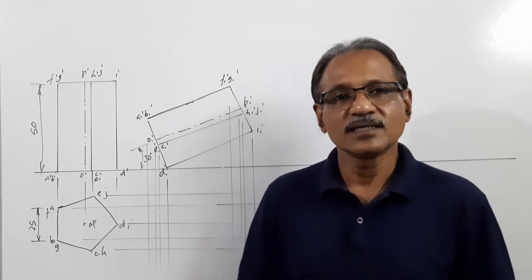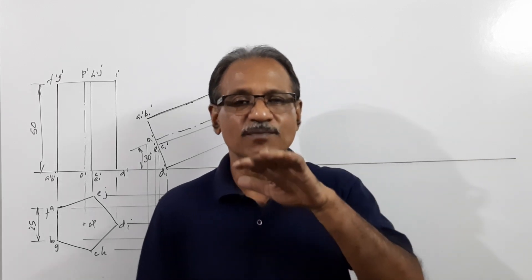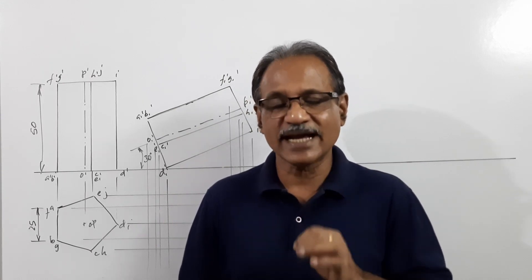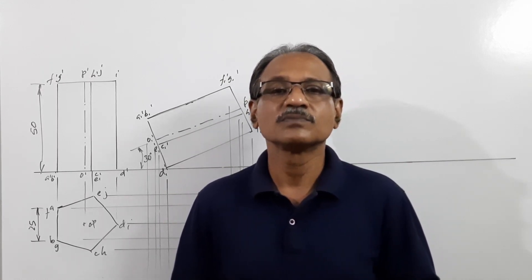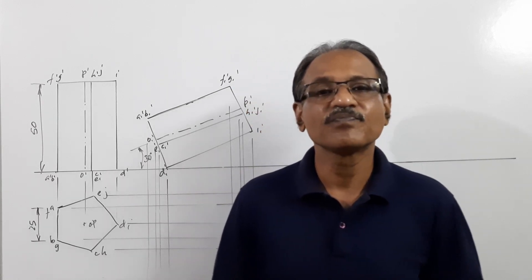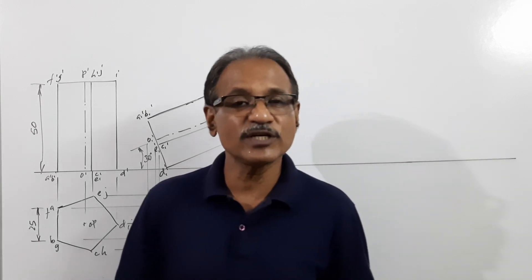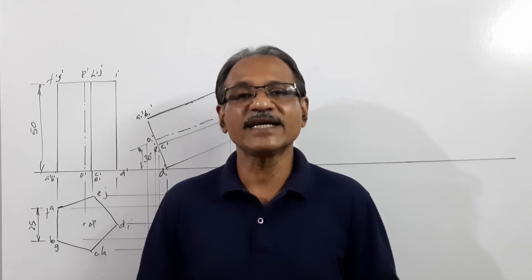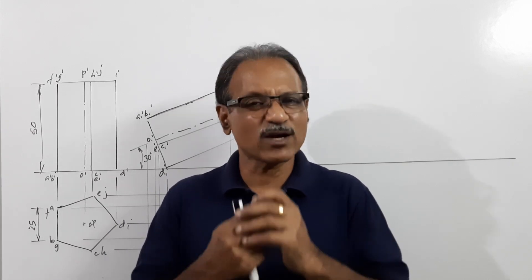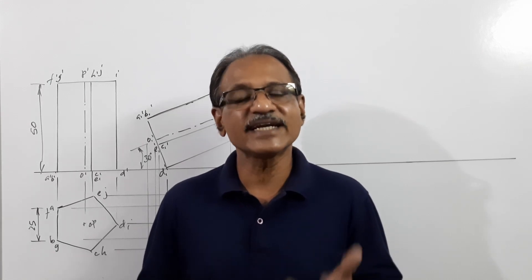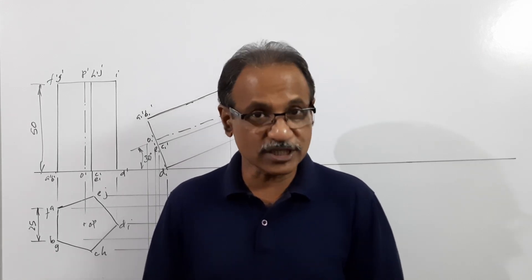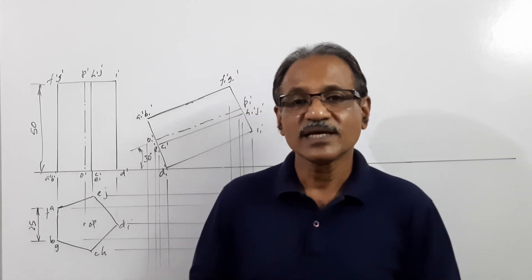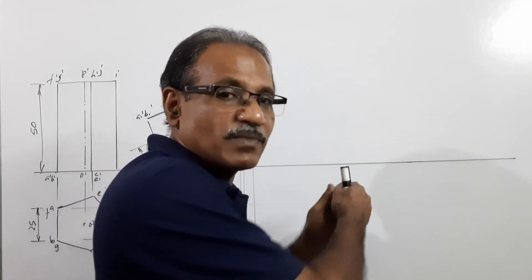The question says: a pentagonal prism, 25 mm side of base and 50 mm axis, stands on HP on a corner of base, with the axis making 30 degrees to HP and 40 degrees to VP. Draw the projections if the nearest point of the prism is 15 mm in front of VP.